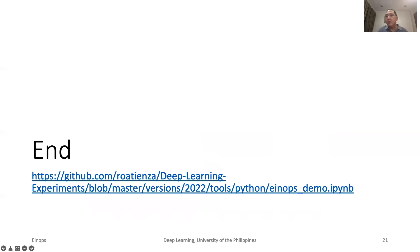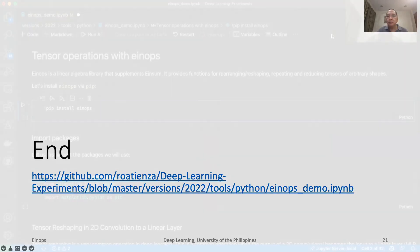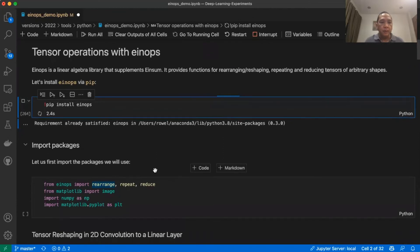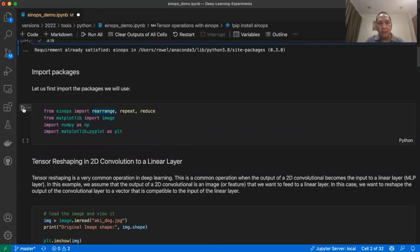Thank you for listening. In the next part, we will have code demo. The details of code examples can be found in GitHub. EinOps is a linear algebra library that supplements EinSum. It provides functions for rearranging or reshaping, repeating, and reducing tensors of arbitrary shape. The first thing that you should do before you use EinOps is to install it via pip. And then import the required packages, including those that we will use for showing the images. And also, we will import numpy.